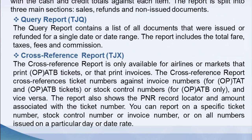The cross-reference report is only available for airlines or markets that print O-PATB tickets or that print invoices. It cross-references ticket numbers against invoice numbers for O-PTAT and O-PATB tickets, or stock control numbers for O-PATB only, and vice versa. The report also shows the PNR record locator and amount associated with the ticket number. You can report on a specific ticket number, stock control number, or invoice number, or on all numbers issued on a particular day or date range.